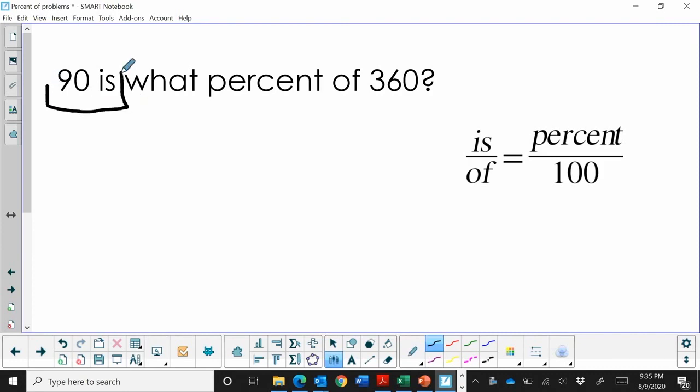So 90 is the is. What percent is our unknown, so we're going to call that part x. Of 360, so the of is 360.